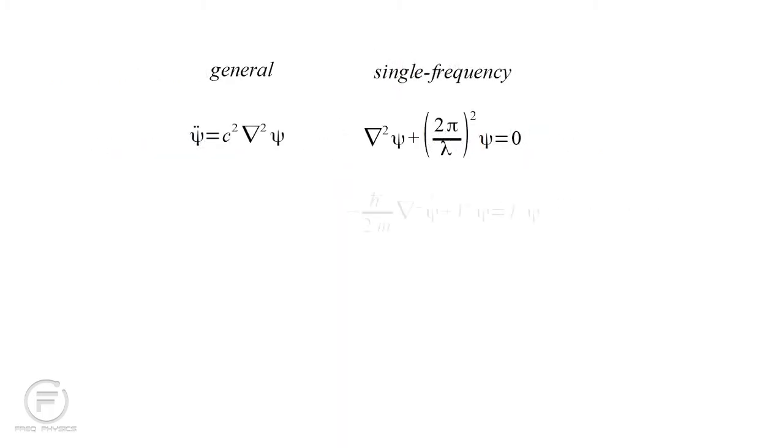Still, this form of the Schrödinger equation, as the Helmholtz equation from which we obtained it, is limited to single frequency fields, corresponding to Bohr's stationary states. We want to find the general form of the equation.